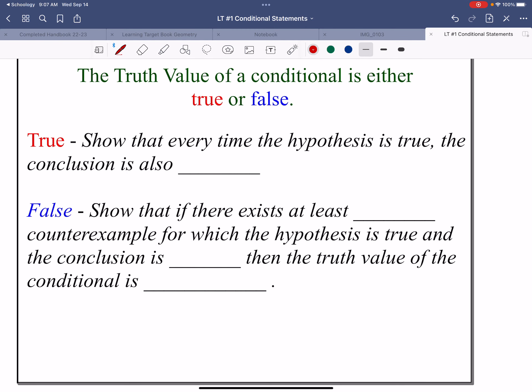Now, the truth value of a conditional is either true or false. If it's true, you've got to show that every time the hypothesis is true, then the conclusion is also true.